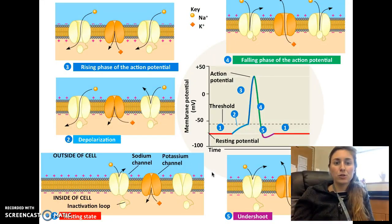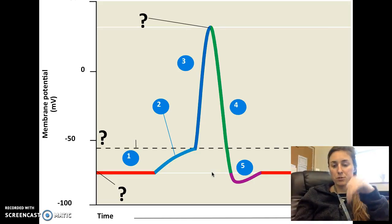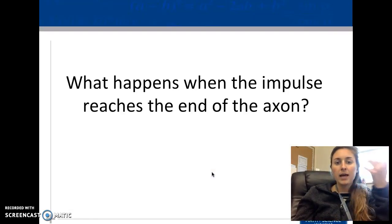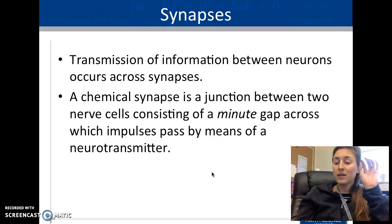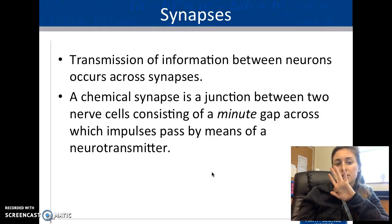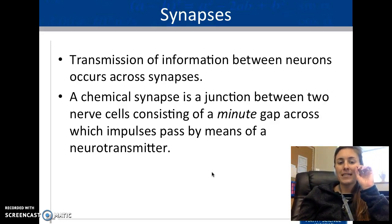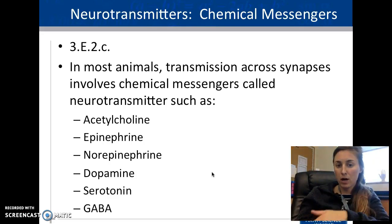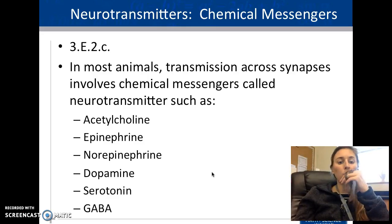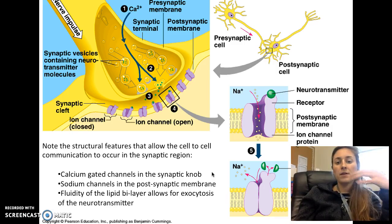At the synapse, the message has traveled all the way down and the impulse reaches the axon terminal. There's a small space between the axon terminal and the dendrite of the next cell where the electrical signal becomes chemical. It's a tiny gap, and the impulse needs to become chemical so neurotransmitters can move across.